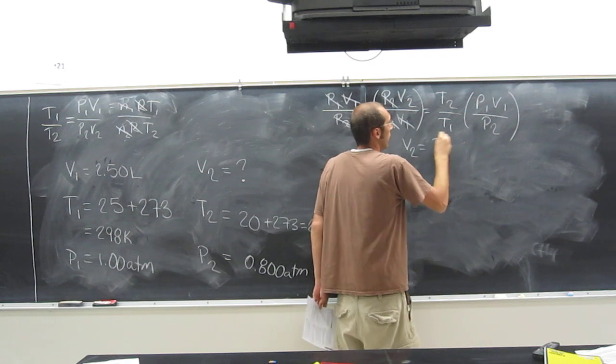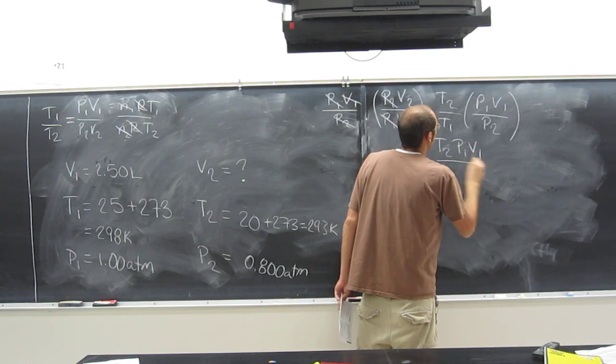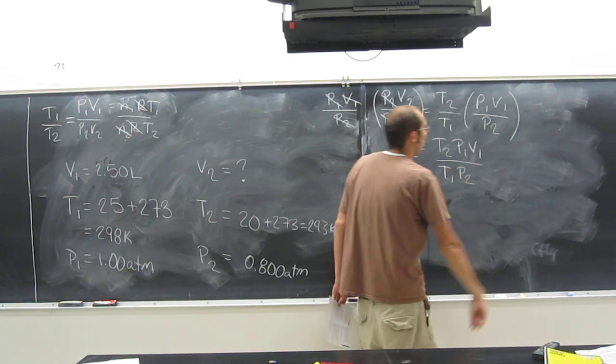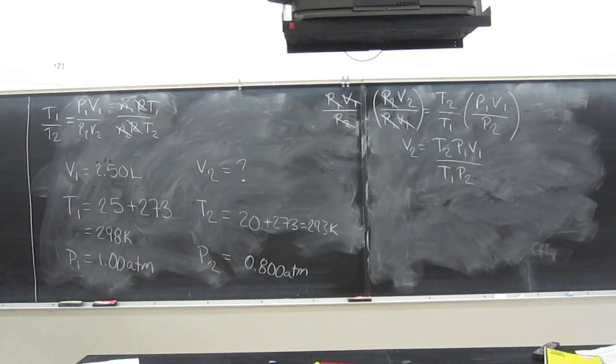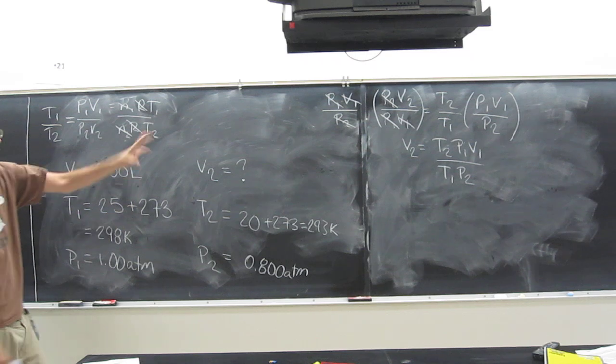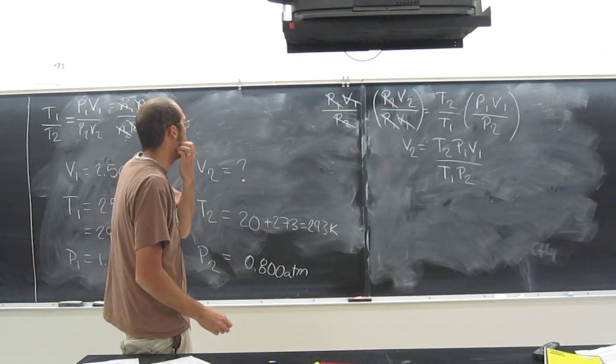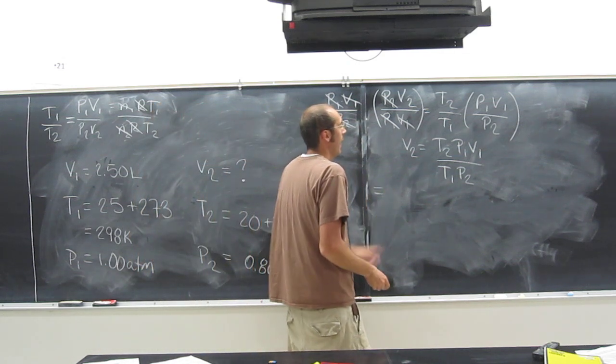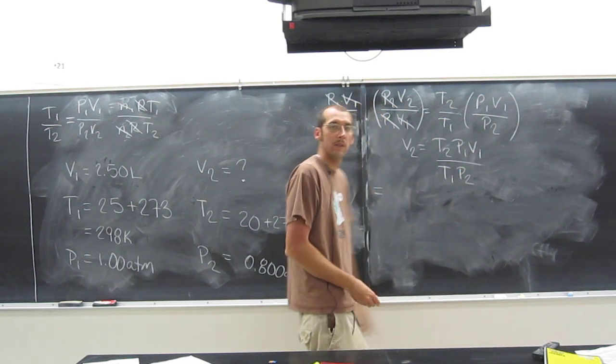And what do we get? V2 equals T2, P1, V1, divided by T1, P2. That's essentially the combined gas law. And now all we do is plug and chug. Do we have all that? Do we have T2, P1, V1, T1, P2? Yep.